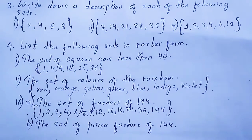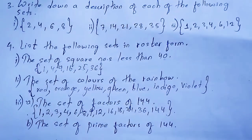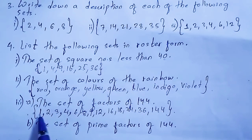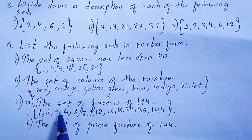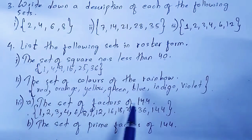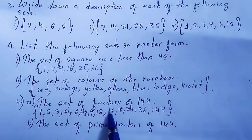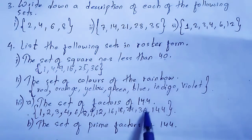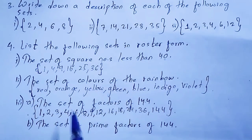Question 3b: the set of prime factors of 144. Looking at the factors we listed, the prime numbers among them are only 2 and 3. The rest are not prime numbers. So the answer is {2, 3}.